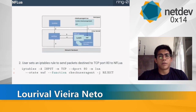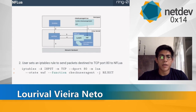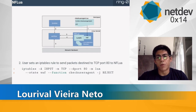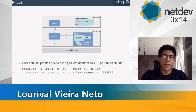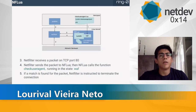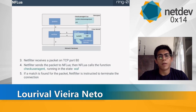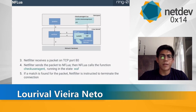After loading the script, we need to create an IPtables rule to call the script when we receive a packet. In this case, it will match all incoming packets destined to TCP port 80 and call the check user agent function. So whenever NetFilter receives a packet on TCP port 80, it will send the packet to NF Lua and call the check user agent function. If the function returns true, then NetFilter will terminate the connection.